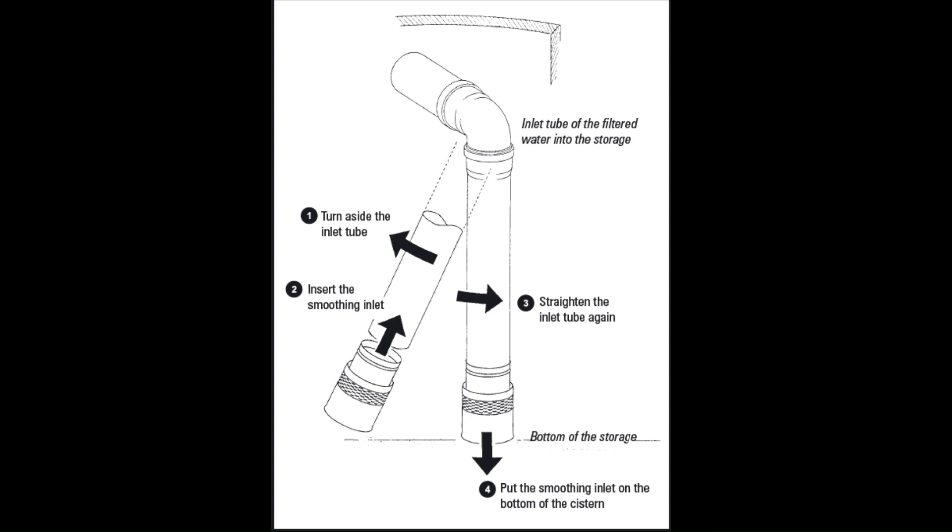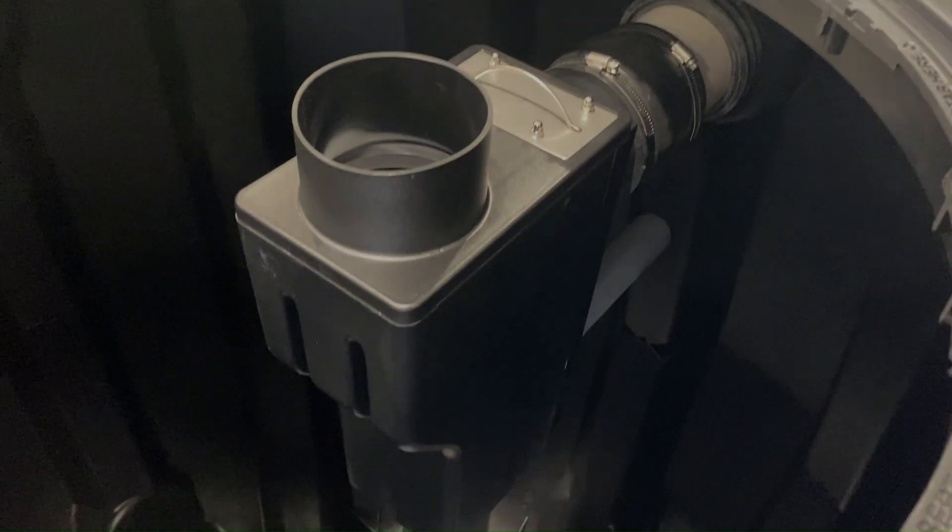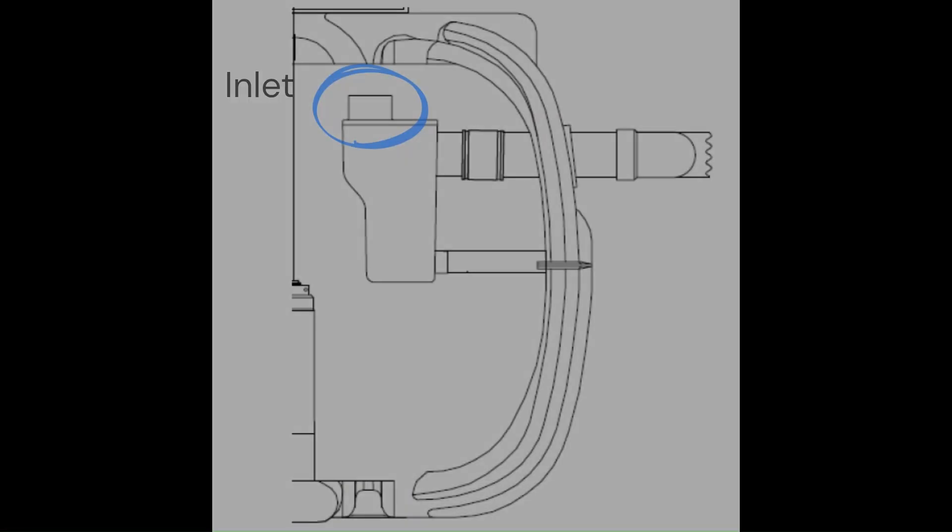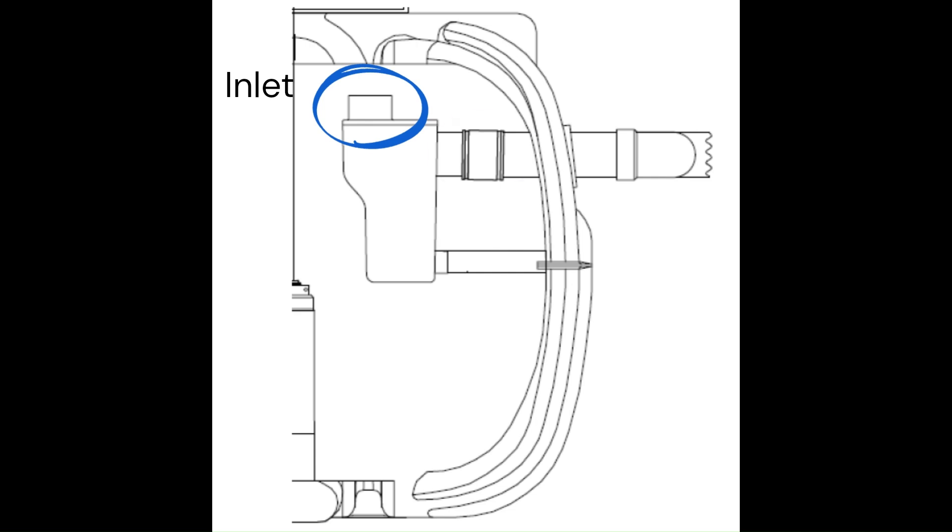The next step is to install the overflow device and associated piping on the end of the tank opposite from the smoothing inlet. These devices have an inlet to accept overflowing water, an outlet to release water through the tank overflow pipe, and a lower support strut that rests against the side of the tank.